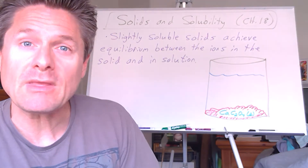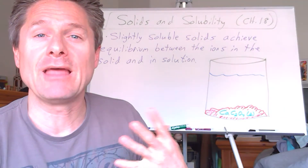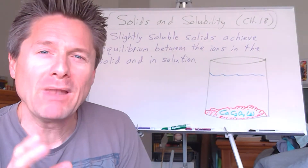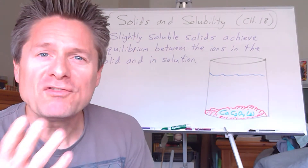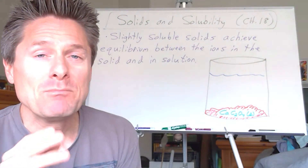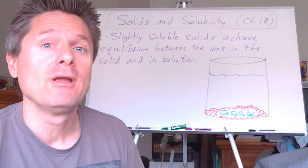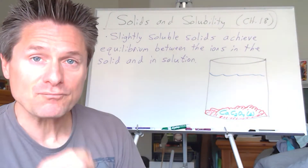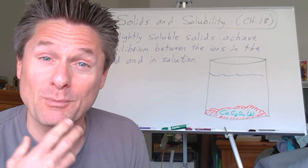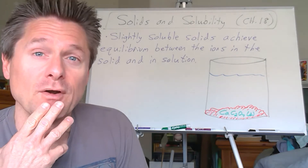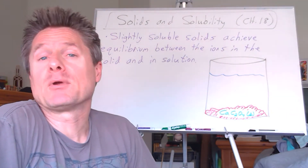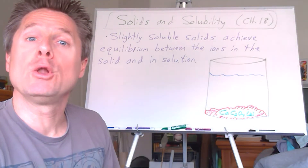In introductory chemistry and first-semester general chemistry we called these insoluble solids and pretended they don't dissolve at all. But on a molecular or atomic scale, all solids dissolve or dissociate to a small extent. Water comes in and pulls out some cations and anions. Depending on the charges and how small those ions are, the stronger those electrostatic attractions — using Coulomb's law — the harder it is for water molecules to pull them out into solution and surround them with a sphere of water molecules. But it happens to all of them to some extent, and this is where equilibrium occurs.